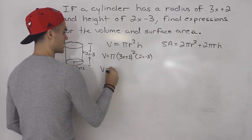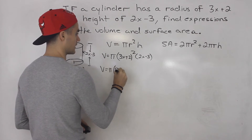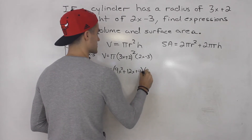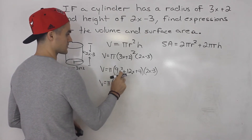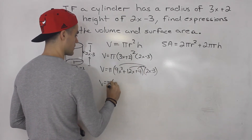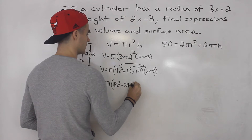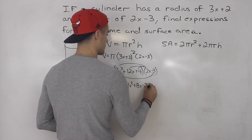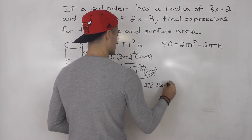So 3x plus 2 times 3x plus 2 — you would have to FOIL out those two brackets — you would end up with 9x squared plus 12x plus 4, then we still have this bracket remaining, 2x minus 3. Taking the 2x and multiplying it by everything we would end up with 18x cubed plus 24x squared plus 8x, and minus 3 would give minus 27x squared minus 36x minus 12.